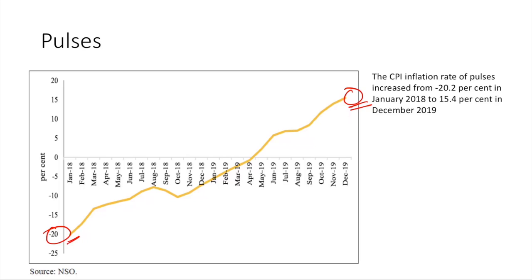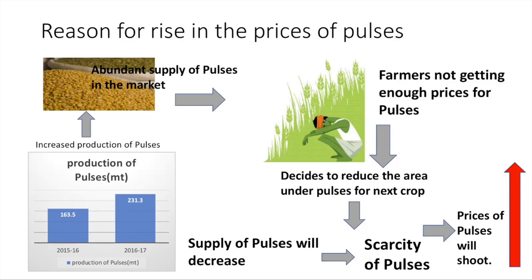This indicates that one year the prices of pulses witness a steep rise, and the next year a steep fall. We don't want this for any commodity — we always want prices to be in a predictable range. Production of pulses increased, causing abundant supply in the market. As supply exceeds demand, prices crash and farmers will not realize good prices for their produce.